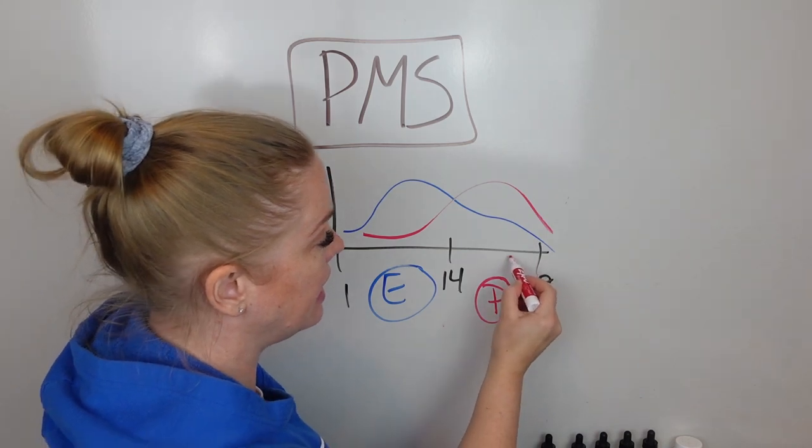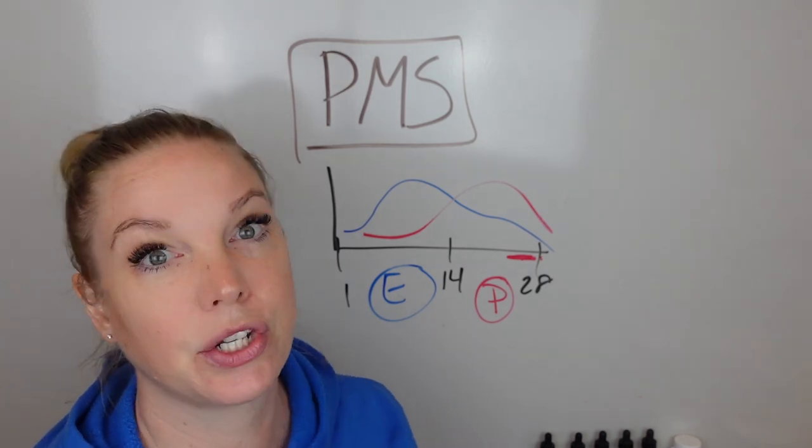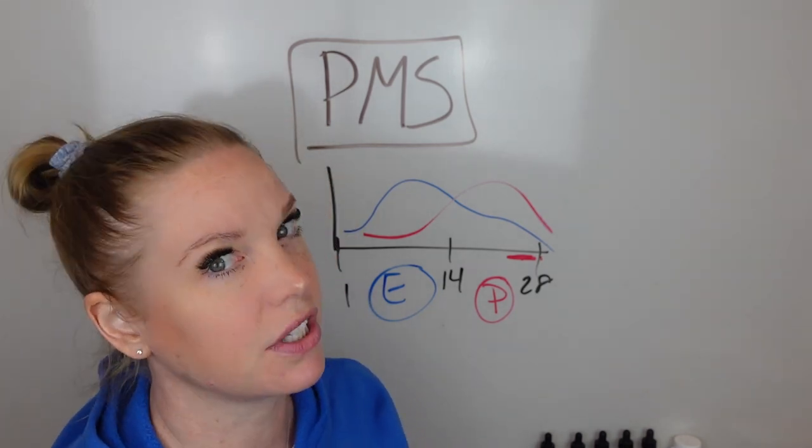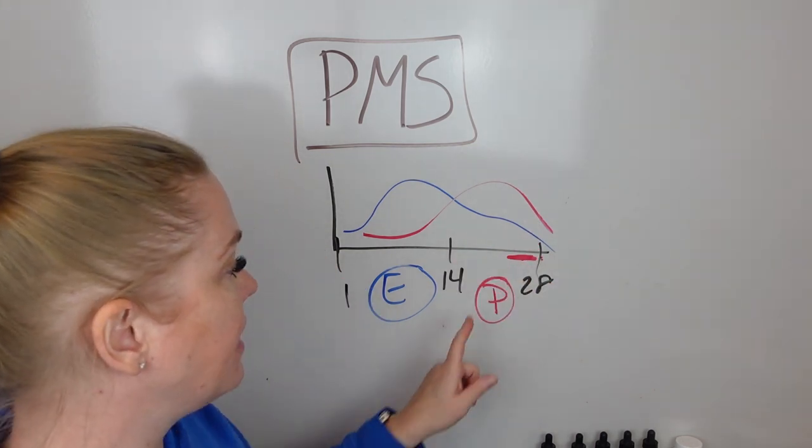Now because especially leading up to when your period would start or the end of the cycle, the last three, five, seven days, for some people it's even longer, what happens hormonally is very different than what's happened previously.